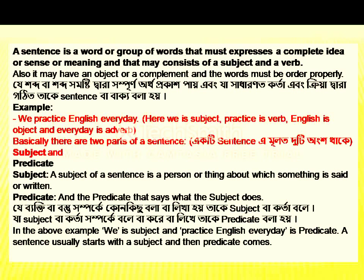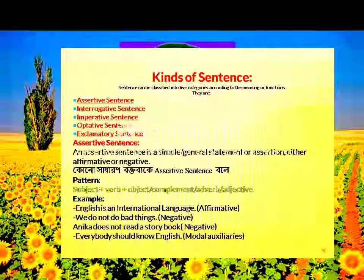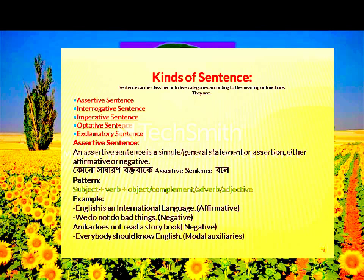There are two parts of a sentence. The first part is called the subject, and the second part is called the predicate. Examples of subjects: I, you, he, she, it, daddy, author. The predicate shows what the subject does.